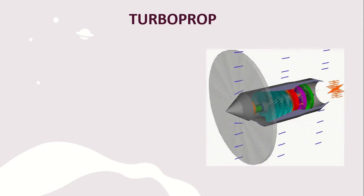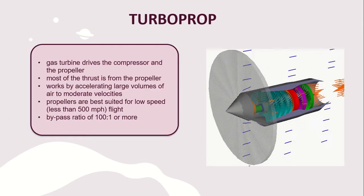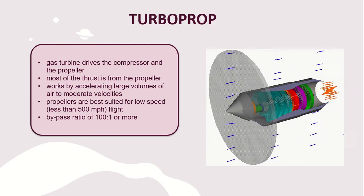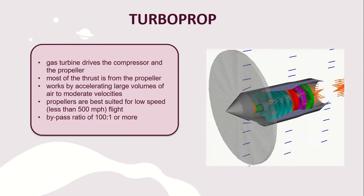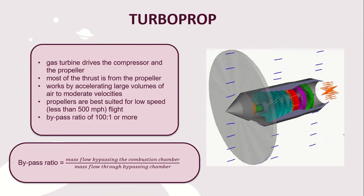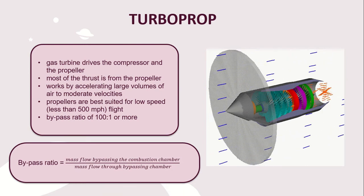The turboprop: a gas turbine drives the compressor and the propeller. Most of the thrust comes from the propeller. It works by accelerating a large volume of air to moderate velocities. Propellers are best suited for low-speed flight, less than 500 miles per hour. The bypass ratio is 100 to 1 or more — defined as the mass flow bypassing the combustion chamber over the mass flow through the combustion chamber.